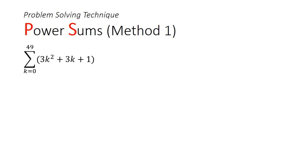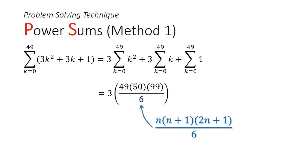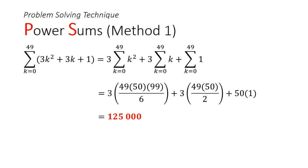One way to solve this is to make use of power summations covered in the last lecture. We can split this summation into three sums: 3 times the sum of squares, plus 3 times the sum of natural numbers, and a sum of 1s. The sum of squares is given by n(n+1)(2n+1) over 6. The sum of natural numbers is n(n+1) over 2. For the last sum, it's just 1 added 50 times — and k equals 0 is an important case here because when k is 0, it still contributes 1. In total, we get 125,000.